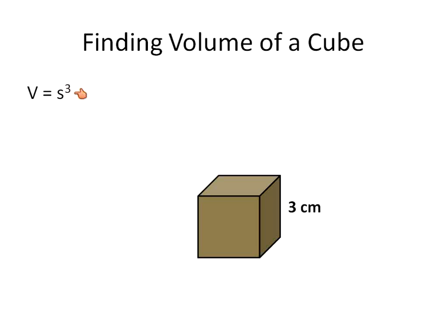Hence why we call it 'to the power of three' — cubed — because we're moving into three dimensions, just like this cube. So if we're given one side length, for example three, and we're told it's a cube, we can just say three to the power of three, or three cubed, which is the same as three times three times three, which is 27.